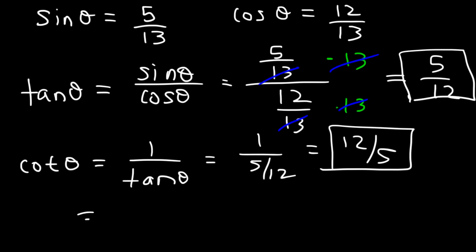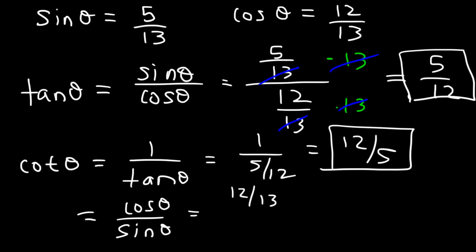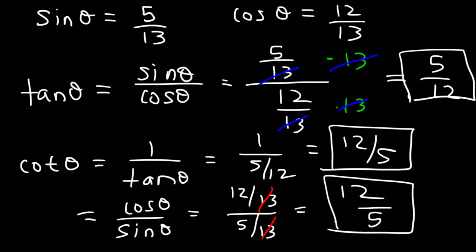Keep in mind you can always find cotangent directly as cosine over sine. Cosine is 12 over 13 and sine is 5 over 13, and the 13s will cancel, which also gives you 12 divided by 5. So that's cotangent in this particular problem.